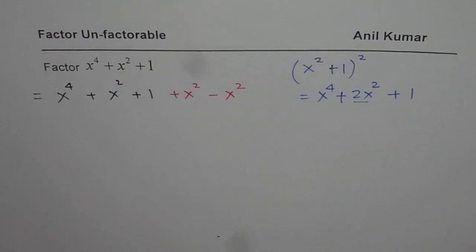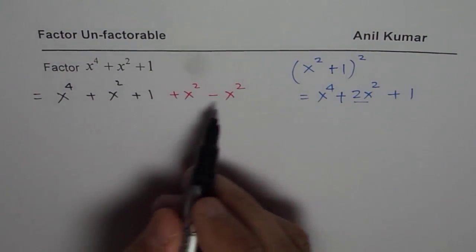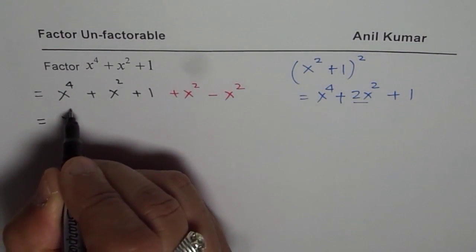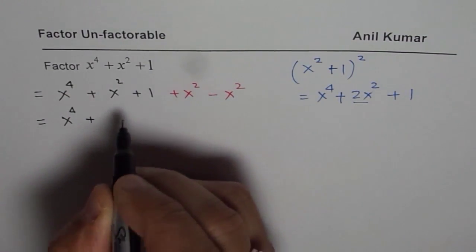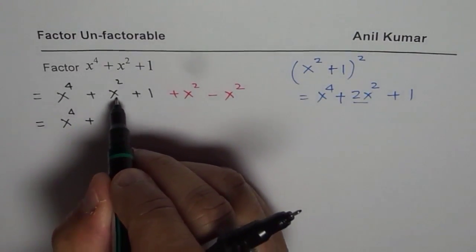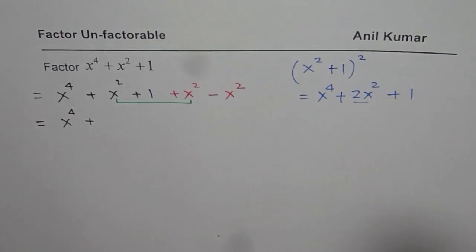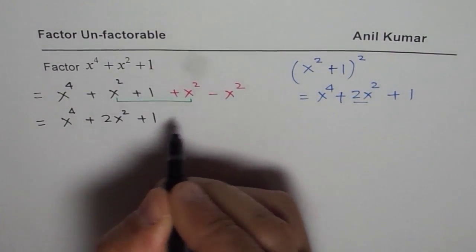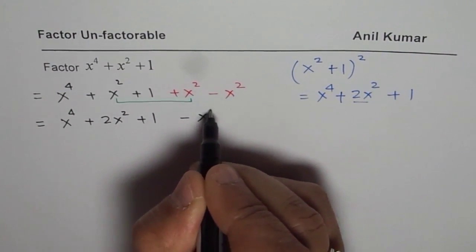But this helps us to modify and then factor. So we get this x to the power of 4 plus, I am combining these two now. Let us say these two I will combine. And I can write this as 2x square plus 1. And I have minus x square.